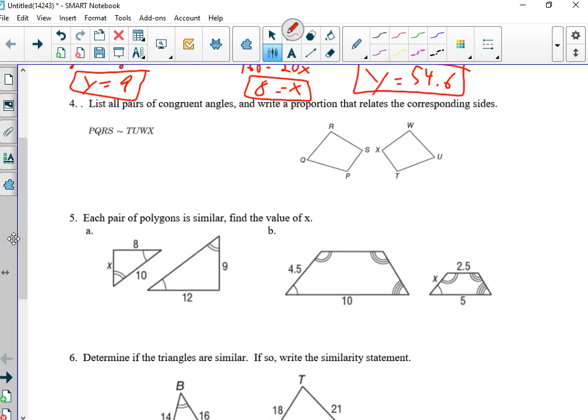This all pairs in congruent angles and write proportions that relate to the corresponding sides. So it tells us here that these two are similar. So let's cheat and put our letters right underneath. And now we can see what lines up. So angle B is congruent to angle T right underneath it. Angle Q is congruent to angle U. Angle R is congruent to angle W. And angle S is congruent to angle V.